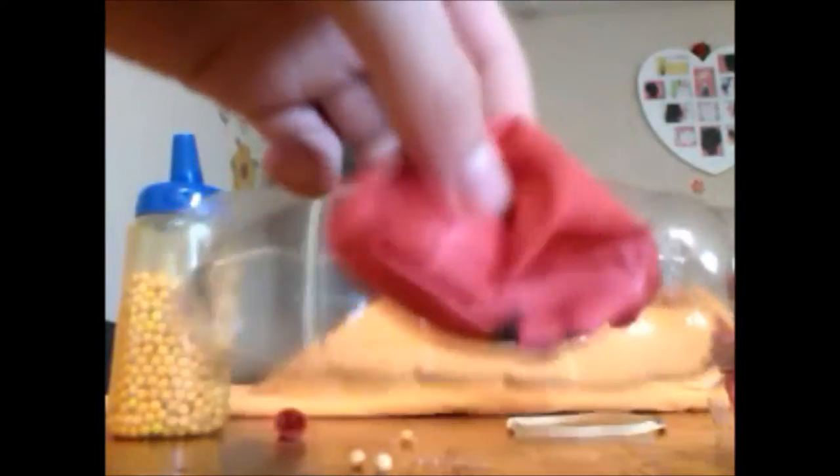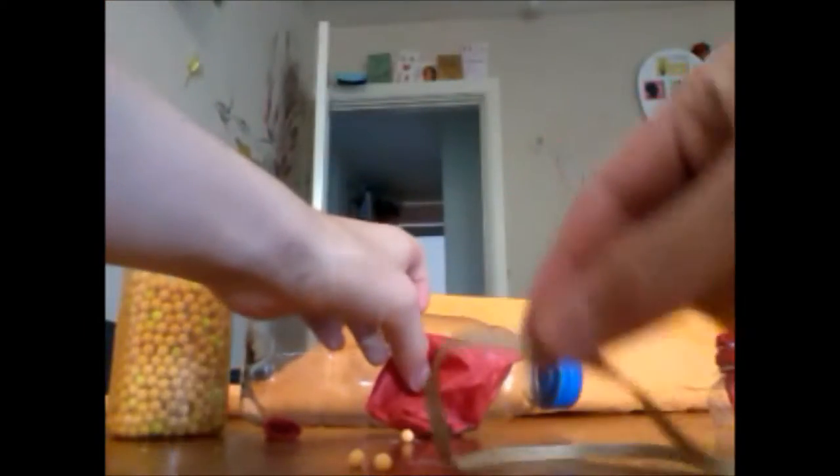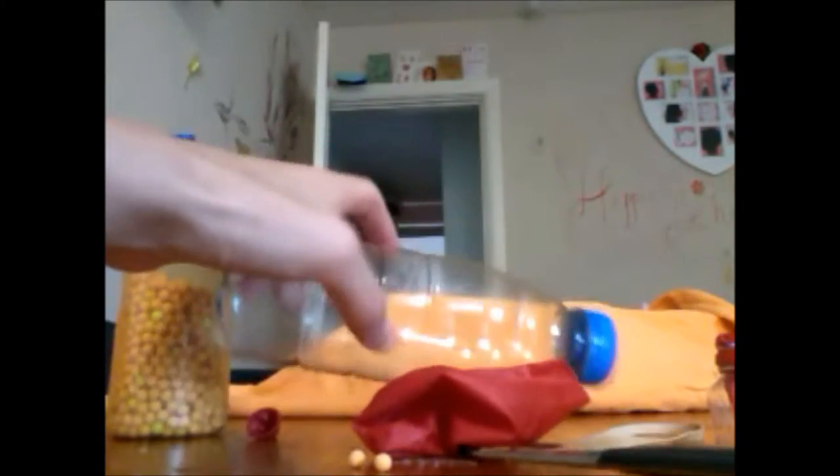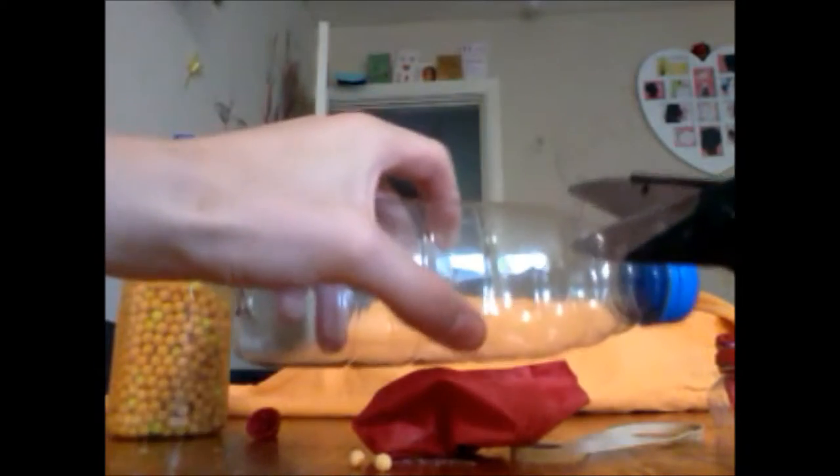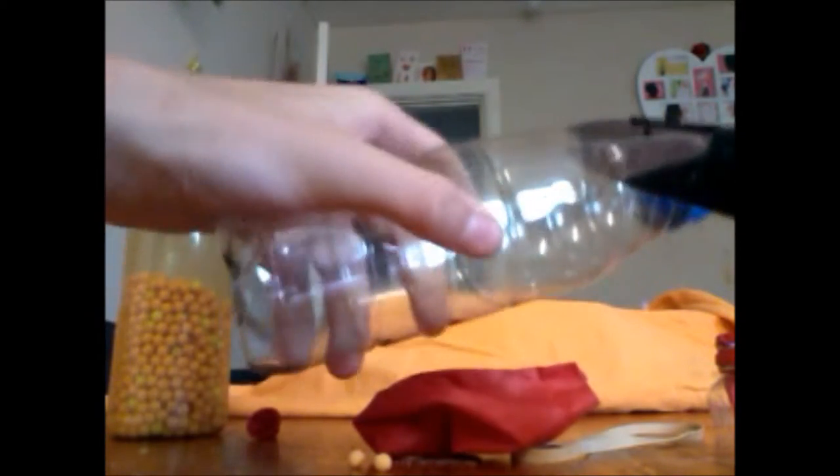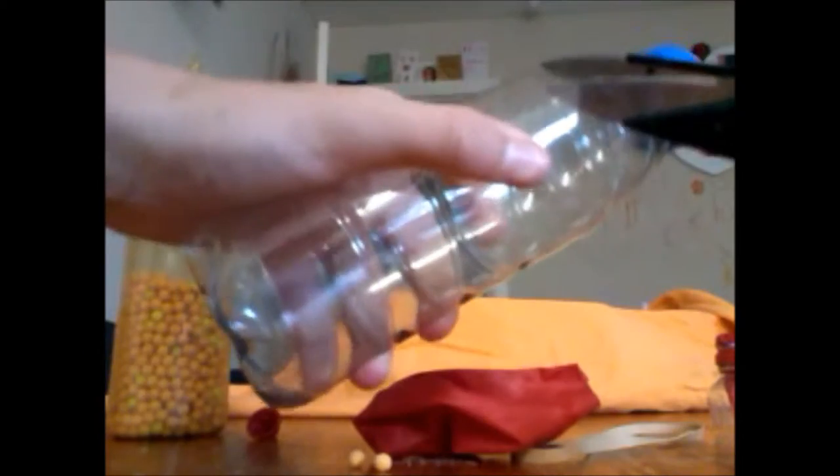So the bottle, balloon, elastic band, scissors, and BBs are there in the corner. To begin with, you want to cut the bottle relatively near to the neck.